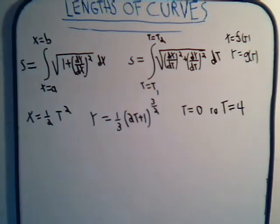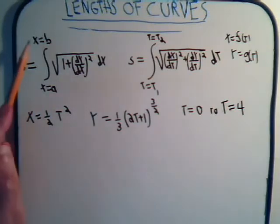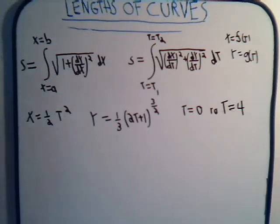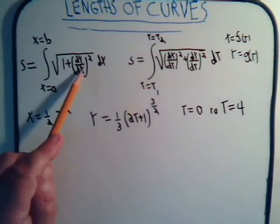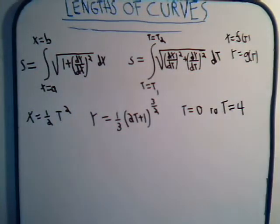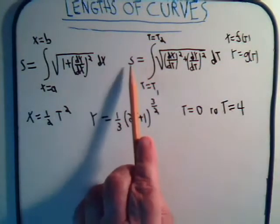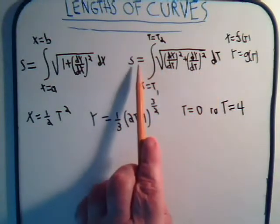From the first video, we determined that the length of a curve from x equals a to x equals b is simply the square root of 1 plus (dy/dx) squared, integrated with respect to x. And in the last video, we obtained this formula for the curve length.